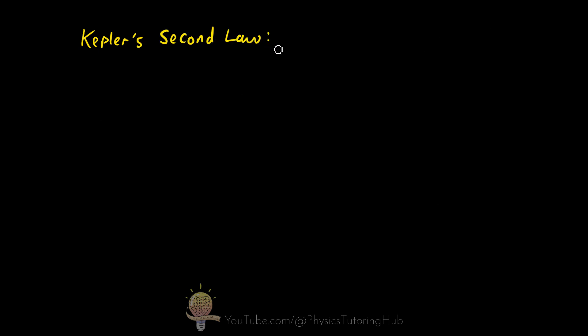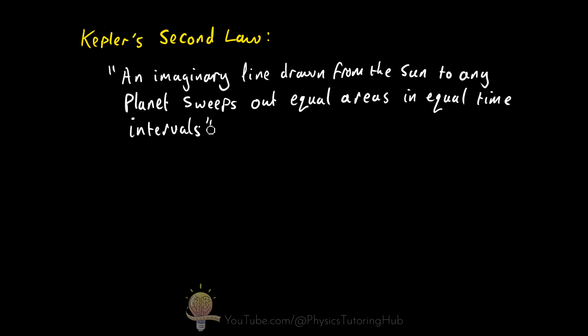Kepler's second law is all about understanding how the speeds of planets vary during their elliptical orbit. The second law states, an imaginary line drawn from the Sun to any planet sweeps out equal areas in equal time intervals.